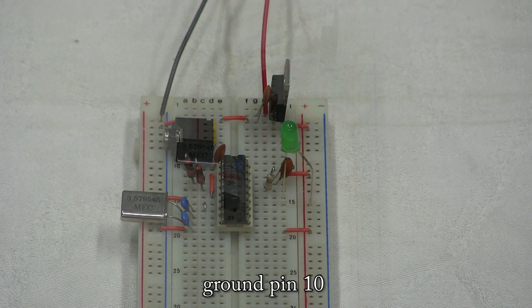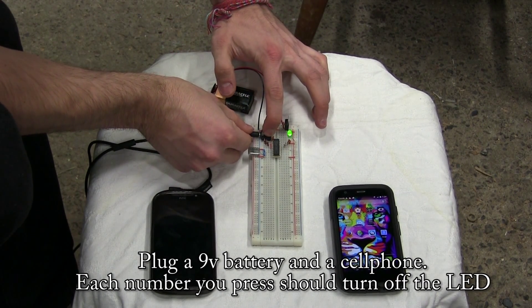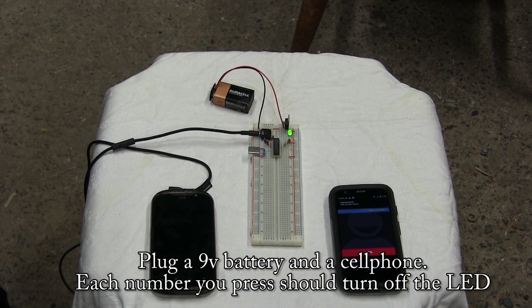Ground pin 10. Connect pin 15 to the middle of a 2N2222 using a 20k. Plug in a 9V battery and a cell phone. Each number you press should turn off the LED.